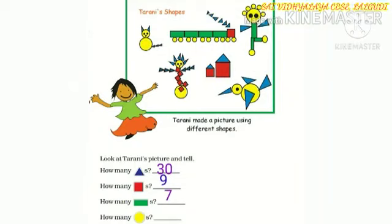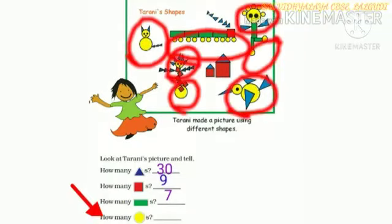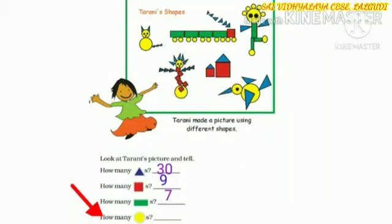Last question. How many circles? All the circles are in yellow color. There are totally 24 circles.